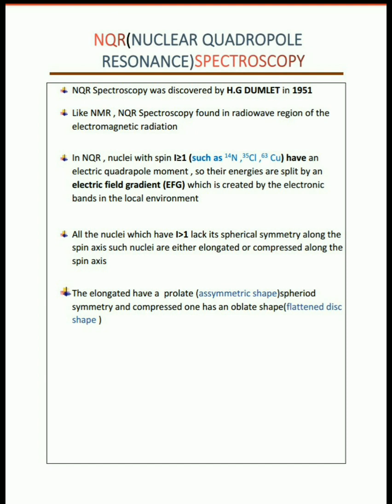But unlike NMR, NQR transitions of the nucleus can be detected in the absence of magnetic fields. For this reason, NQR spectroscopy is referred to as zero field NMR. In NMR, it deals with the coupling between the electromagnetic radiation and the set of energy levels. But in the case of NQR, it deals with nuclear energy levels. Therefore, this is an extension of NMR spectroscopy.